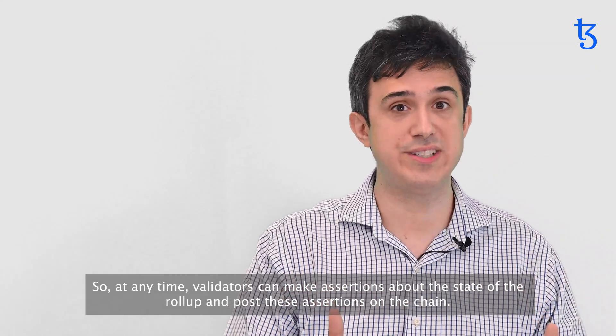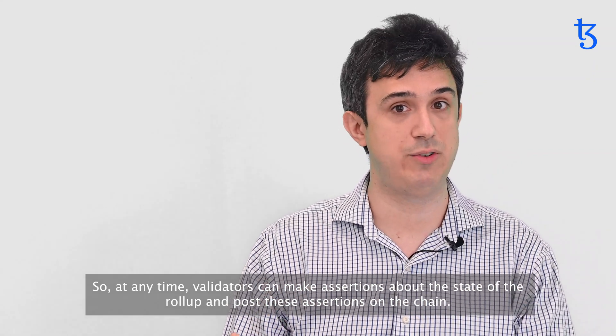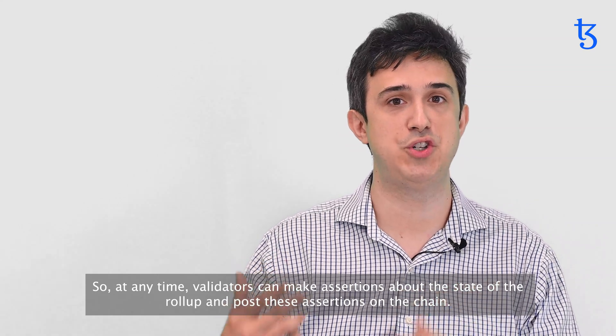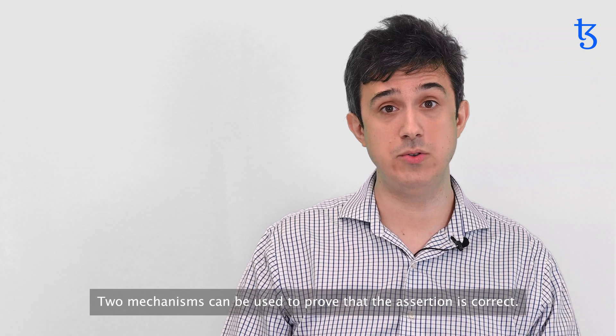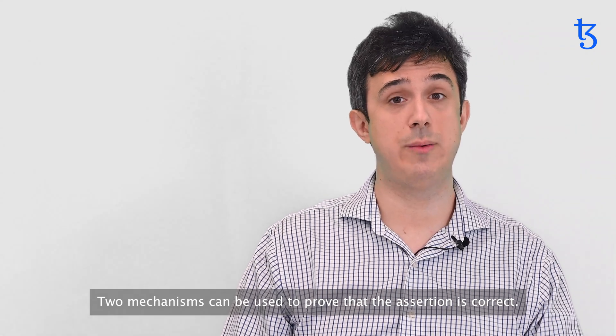So, at any time, validators can make assertions about the state of the rollup and post these assertions on the chain. Two mechanisms can be used to prove that the assertion is correct.